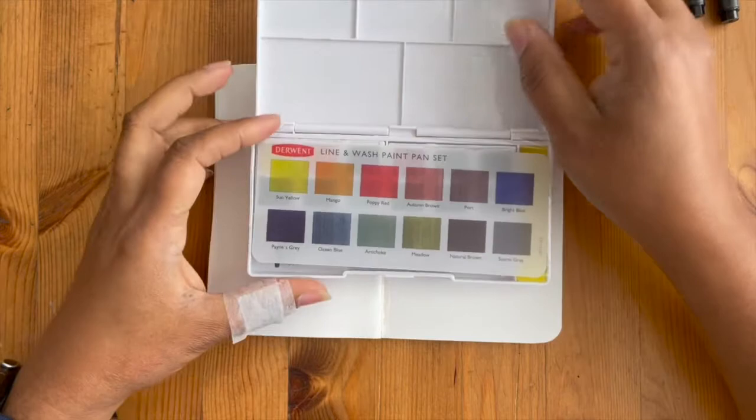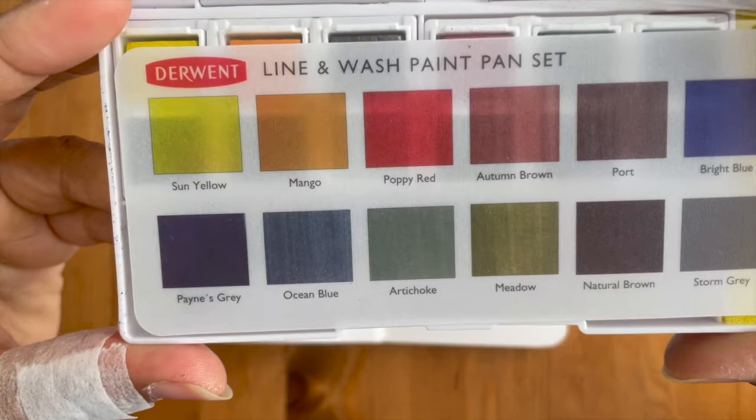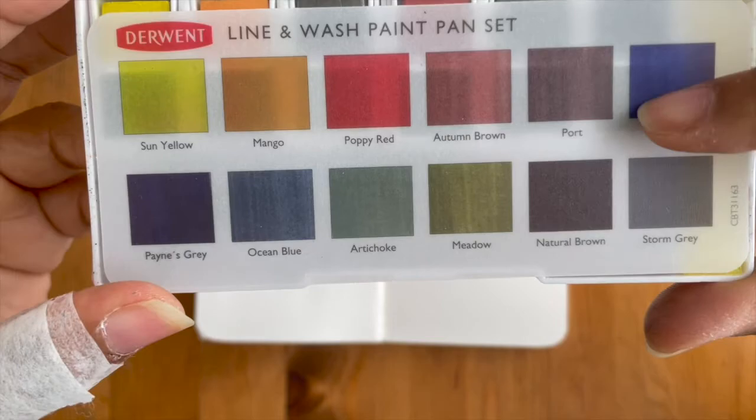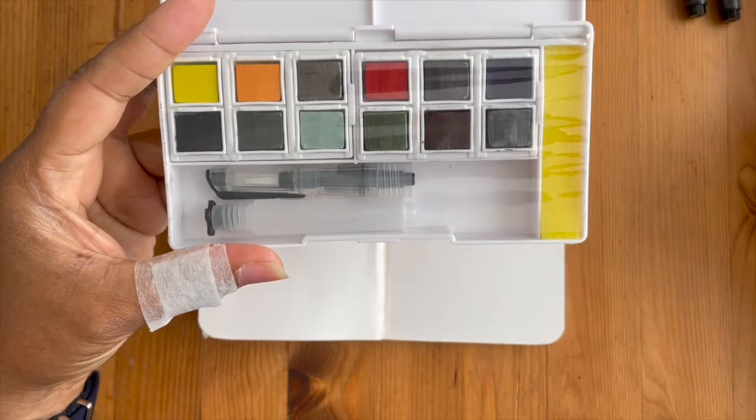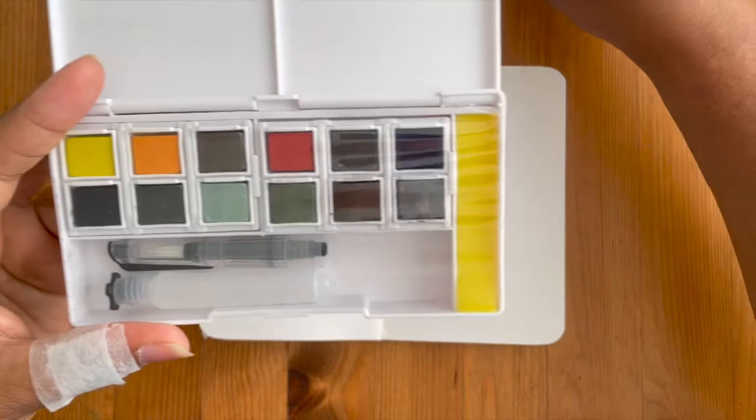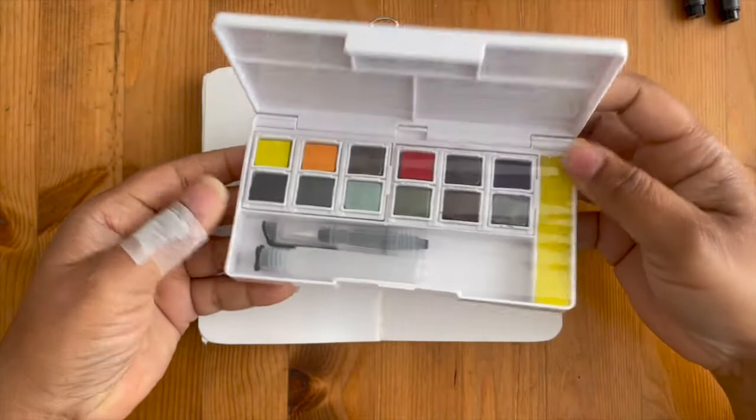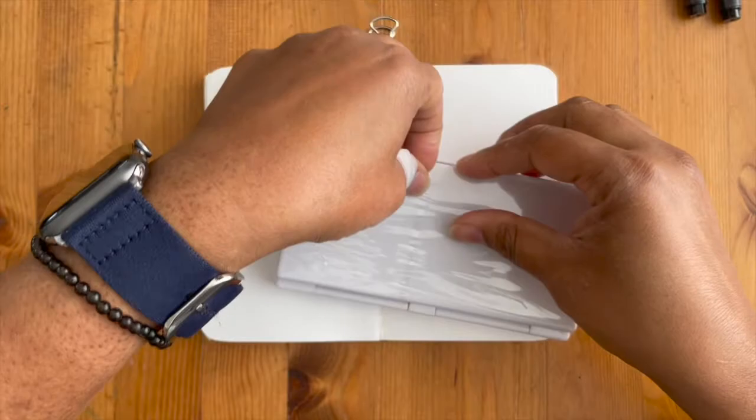Okay, so this line and ink wash kit have sun yellow, mango, poppy red, autumn brown, port, bright blue, Payne's gray, ocean blue, artichoke, which looks like a lovely gray green, meadow, natural brown, and stony gray. I love the fact that they gave me the swatching card on some kind of water resistant vellum sheet here. They gave you everything that you really need. They took out the need for you to carry a towel around.